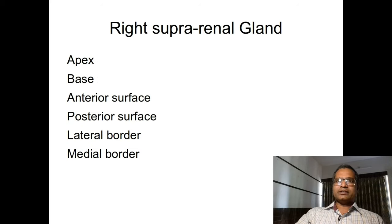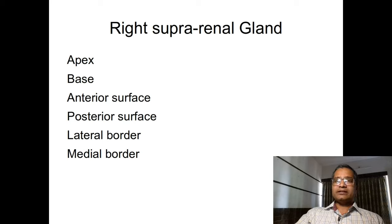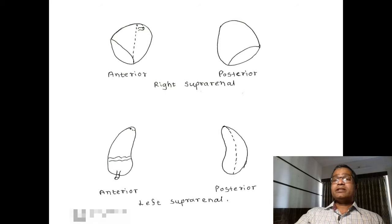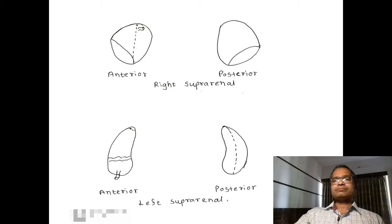The right suprarenal gland is pyramidal in shape. It shows a base, apex, anterior surface, posterior surface, a lateral border, and a medial border. Near the apex, there is the exit of the right suprarenal vein from the anterior surface of the gland. The base is the lower part and lies in relation with the upper part of the right kidney.